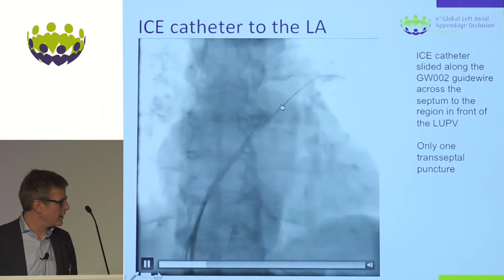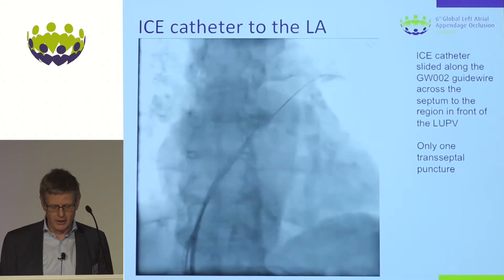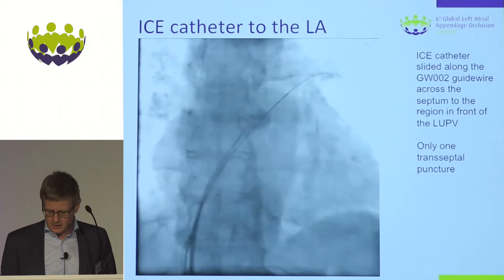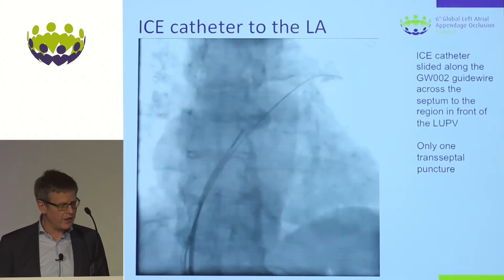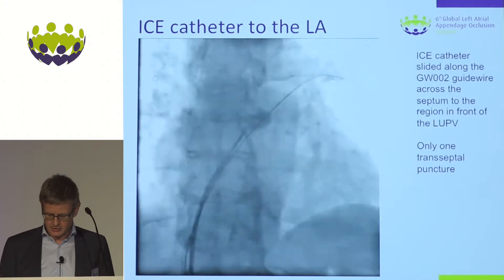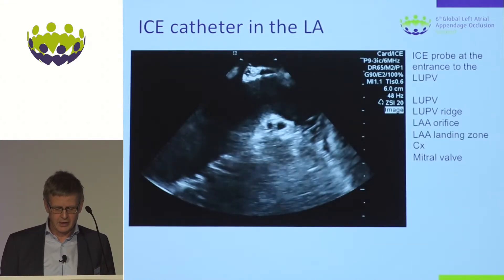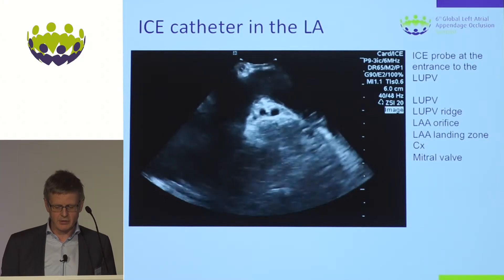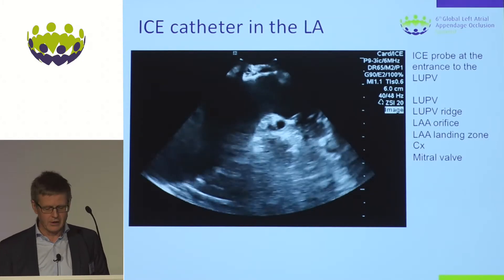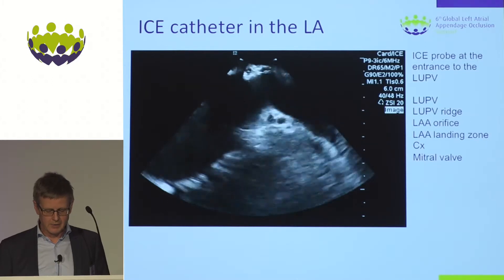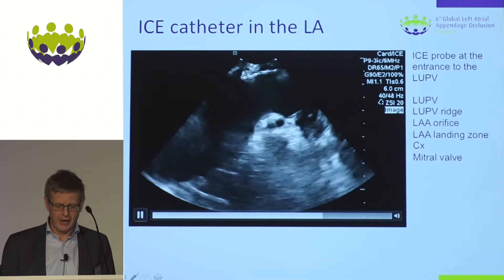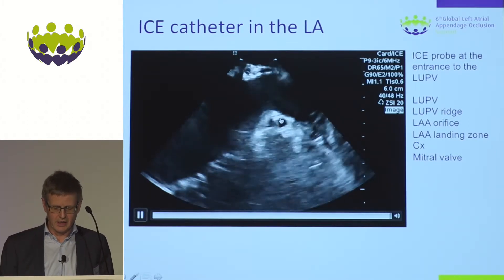A biplane system is helpful but not necessary — with a monoplane system you just rotate to ensure parallelism with the wire. Advance the tip of the ICE probe to the region just outside the left upper pulmonary vein, and you obtain nice images of the left atrial appendage that closely resemble what you see in fluoroscopy and in the 45-degree TEE view. You can clearly identify all anatomical markers: the left upper pulmonary vein ridge, the orifice, and the circumflex artery.